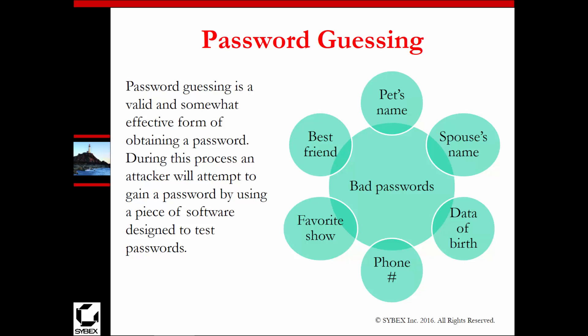Password guessing: it's really sad, but bad passwords are very common — things like phone numbers, names of best friends, pets, spouses, or dates of birth. You'll be surprised how many businesses have an administrator password that's just their phone number, because it's easy to remember. That's where social engineering comes into play, because you can do password guessing based on things that people tell you, like their phone number.